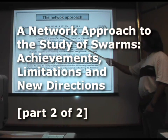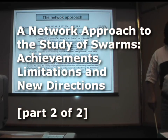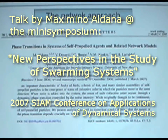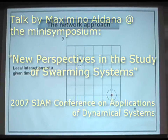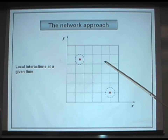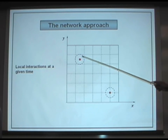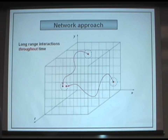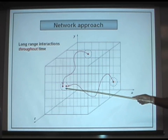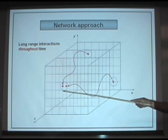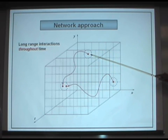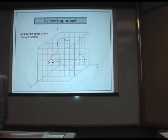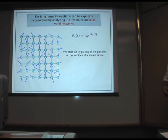Christian and I and some colleagues developed this network approach, and I am talking about this controversy because I want to illustrate the usefulness and power of this approach. It's based on the following observation: at a given time, two particles that are far away from each other don't interact, but as time goes on, these two particles move and eventually come close enough to interact. So at a given moment of time we have local interactions, but during time the system develops long-range interactions, and this is reminiscent of the small world topology of the network.